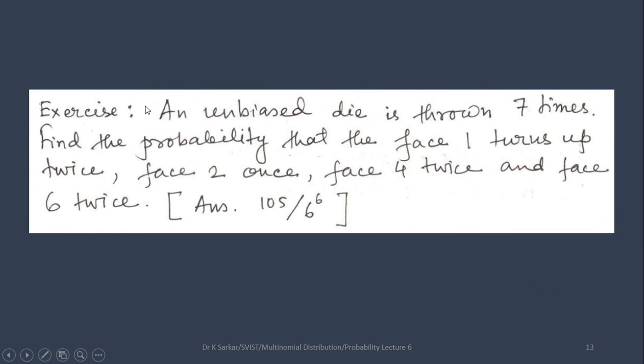Here is an exercise. An unbiased die is thrown 7 times. Find the probability that face 1 turns up twice, face 2 once, face 4 twice and face 6 twice.